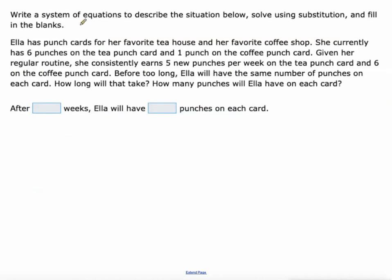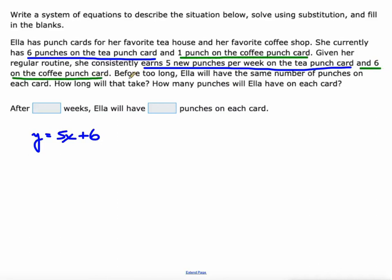Last one here. Ella has punch cards for her favorite tea house and her favorite coffee shop. She currently has 6 punches on the tea punch card and 1 punch on the coffee punch card. Given her regular routine, she consistently earns 5 new punches per week on the tea punch card and 6 on the coffee punch card. So after a certain number of weeks, she's going to have the same number of punches on both cards, basically. The reason I chose this one is because it's kind of separated. She has 6 punches on the tea punch card and she earns 5 new punches per week on the tea punch card. So that's broken up into two different sentences. The total number of punches she has is 5 per week plus the 6 she already has. As far as the coffee, she has 1 punch to start right now and 6 on the coffee punch per week. So the equation there is going to be 6 per week plus the 1 she already has.